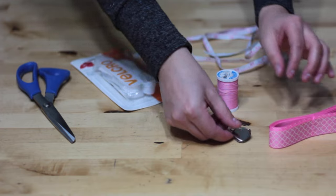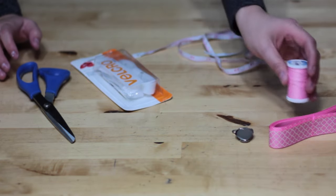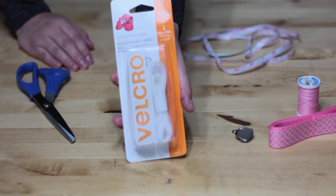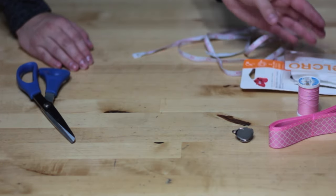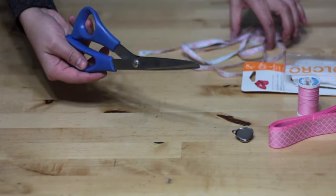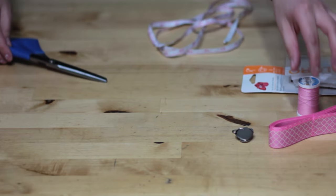You will need matching thread. You're also going to need some sew-in velcro, scissors, and a measuring tape, and of course the sewing machine, which is not shown.